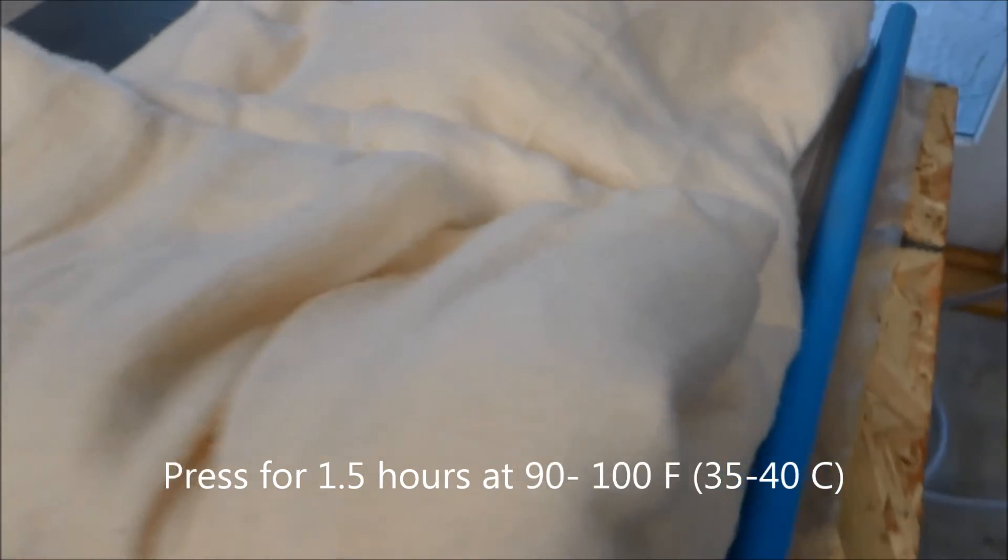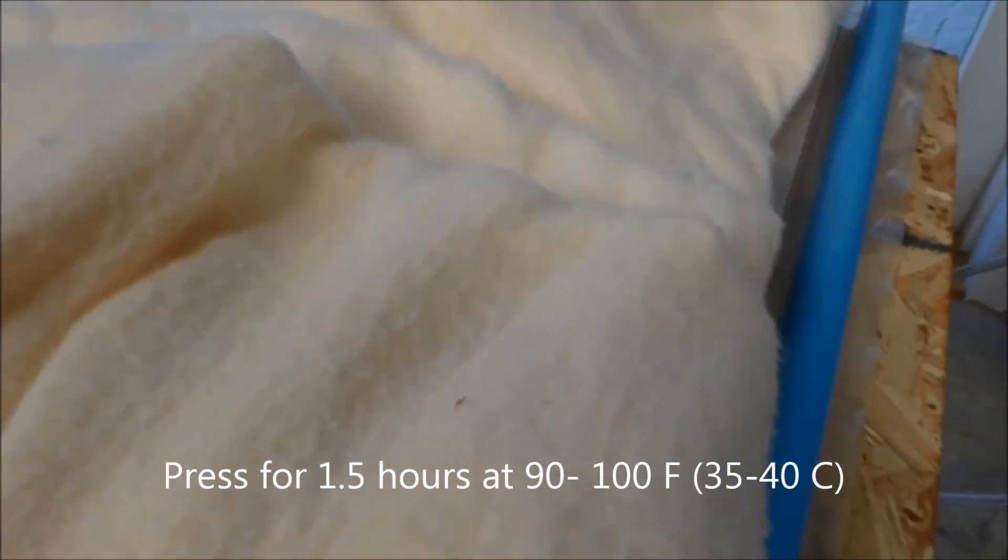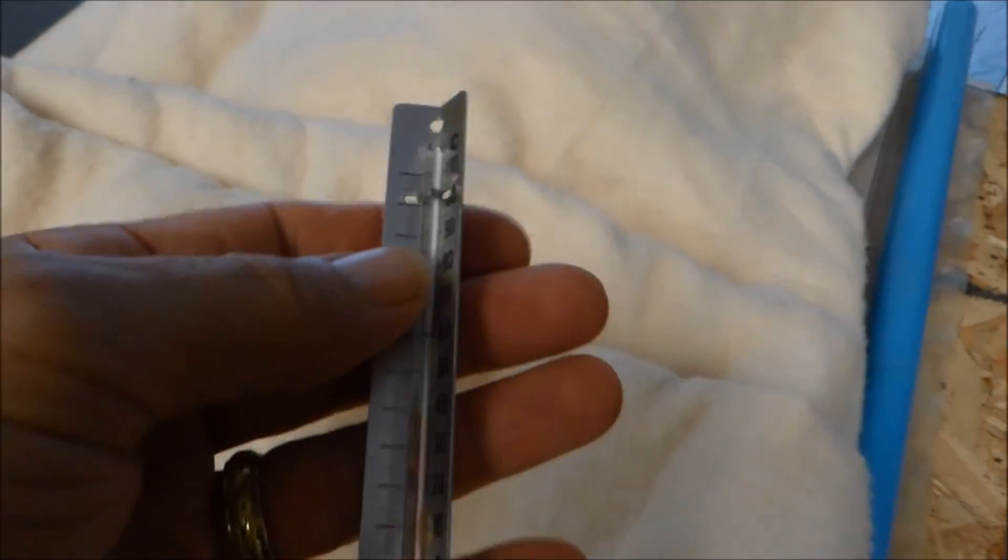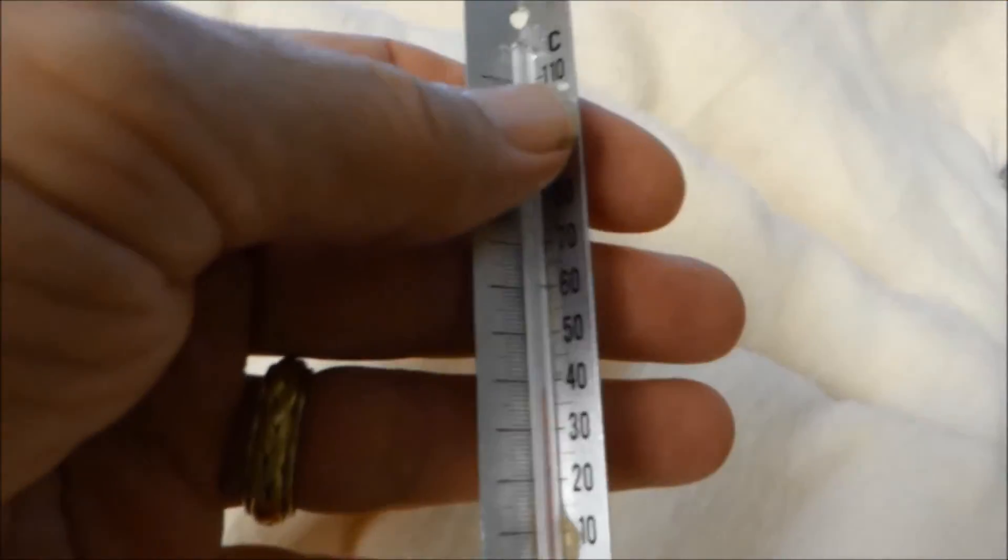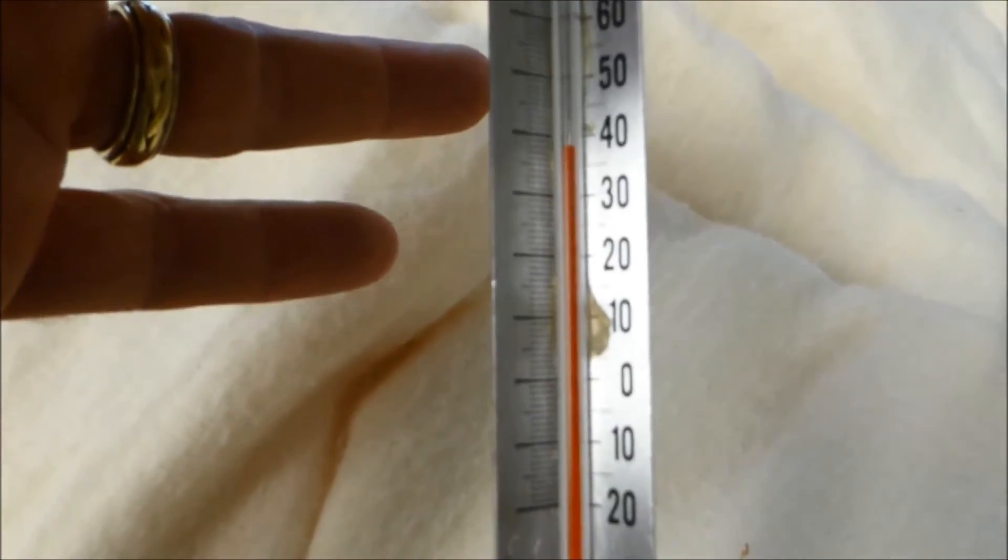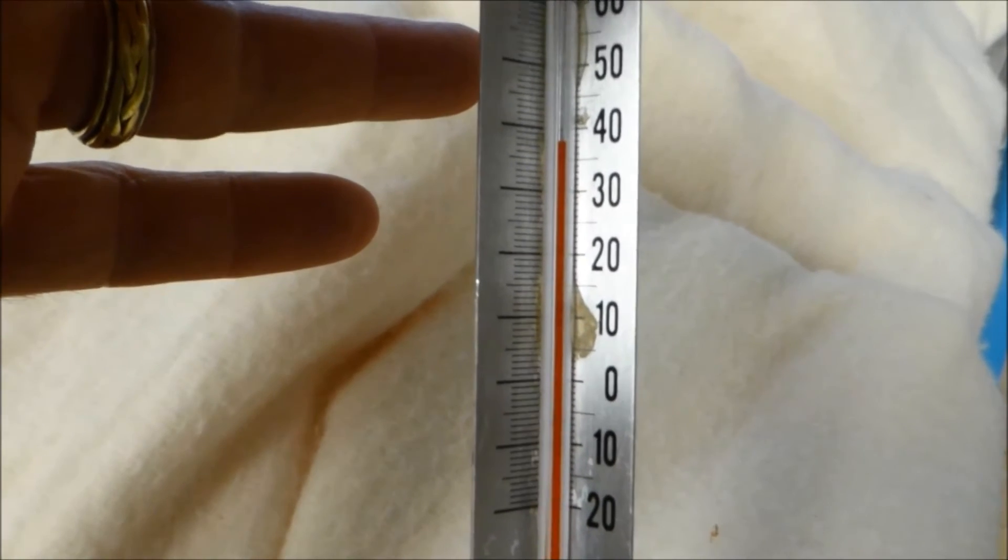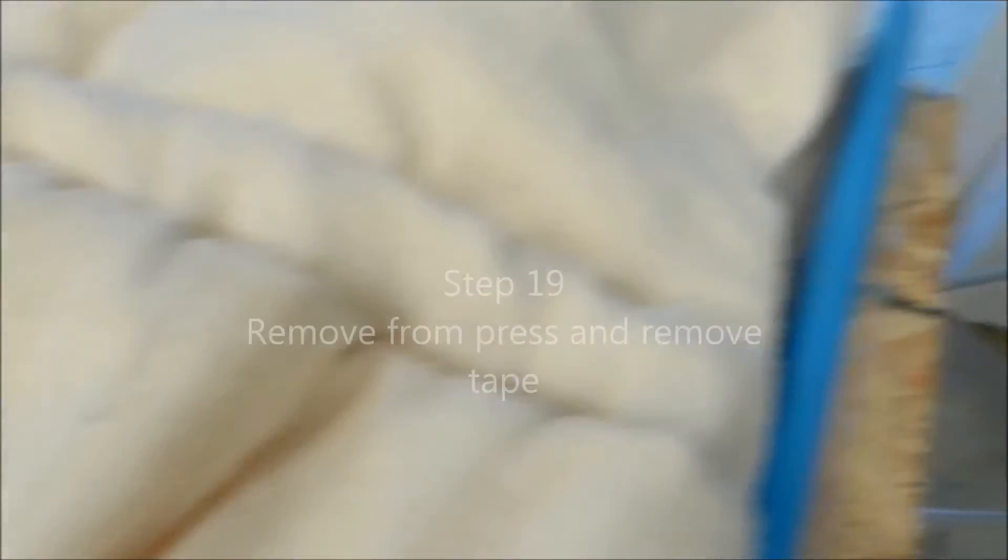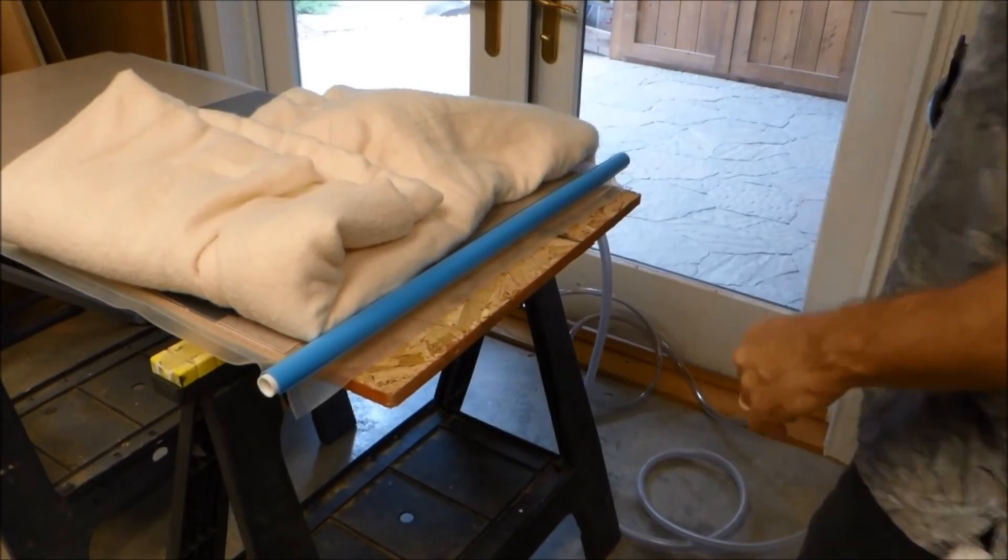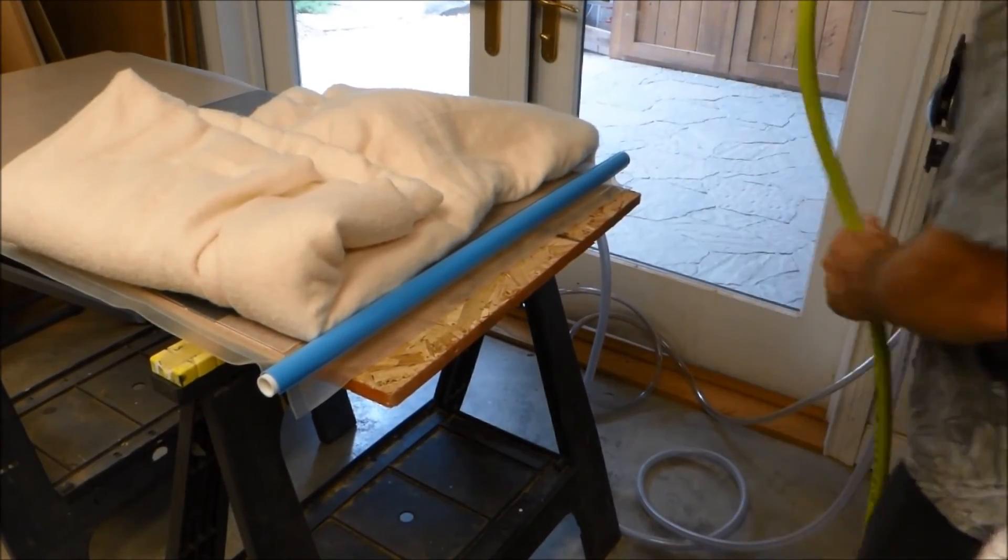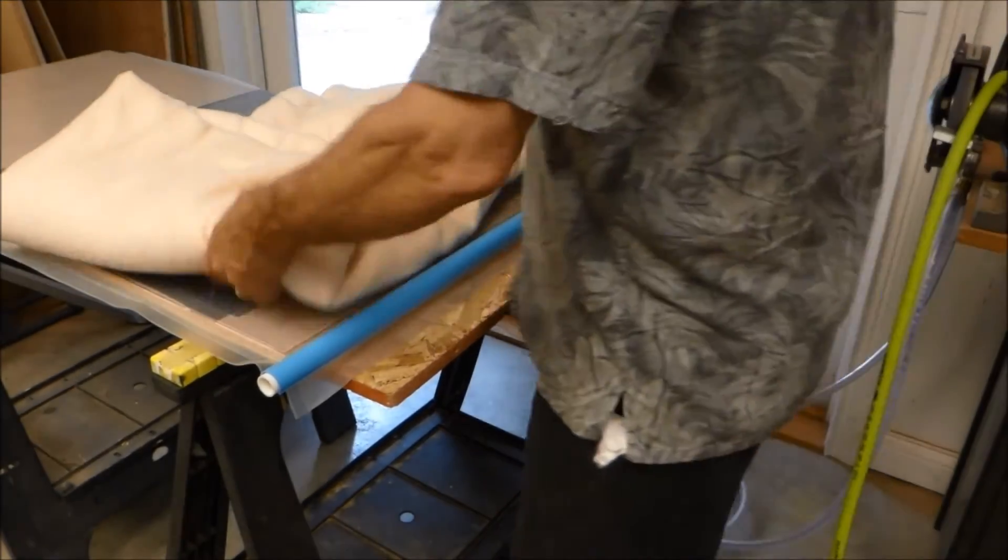As I mentioned we're going to hold it for about 90 to 100 degrees Fahrenheit, which is 35 to 40 degrees centigrade for about an hour and a half. Here I usually throw a little thermometer in there just to make sure it's coming up to temperature. This is just a cheap electric blanket that I bought for 40 bucks from Walmart. Now we're done with the vacuum press and we're going to remove the things from the bag and pull them out and remove the tape to see what we have.